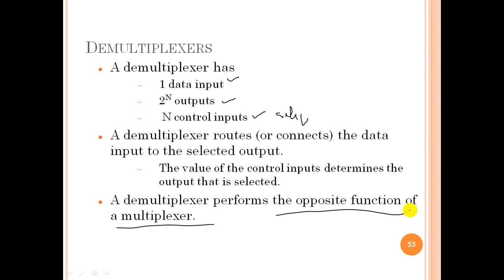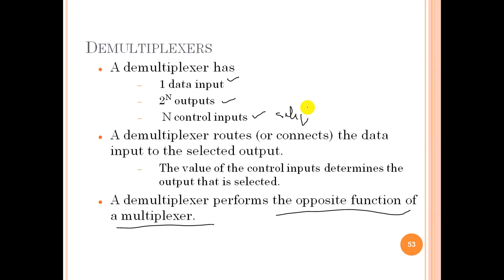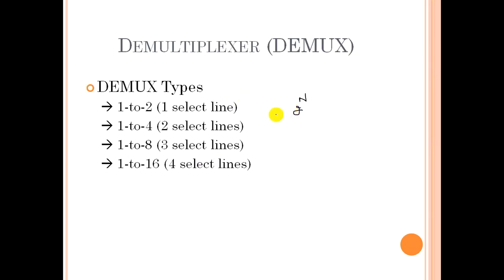If you know the function of the multiplexer, you can easily understand the function of the demux. Now, how many types of demux do we have with respect to select lines? One-to-two has one select line; one-to-four has two select lines; one-to-eight has three select lines; one-to-sixteen has four select lines. This is just like computing 2^n where n is the number of outputs.